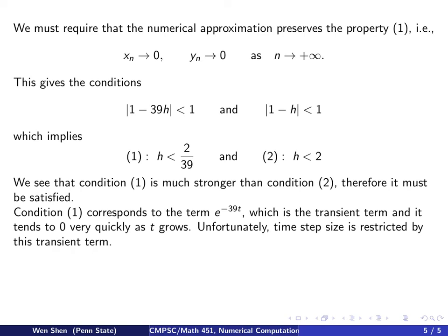So thinking back, where does this term come from? This term corresponds to the term e to the negative 39, right? That's exactly where you get the 39. And that's the term, it's the transient term. And it tends to 0 really, really quick as t grows. After a short time, this term does not have any saying in the solution.